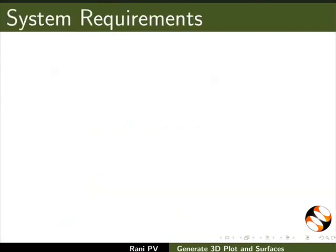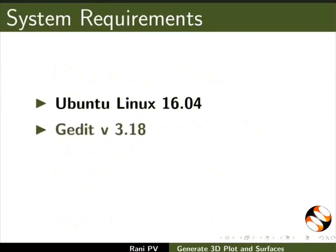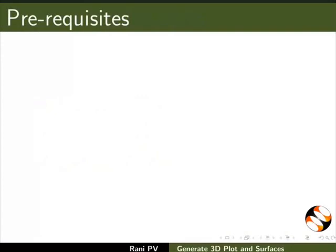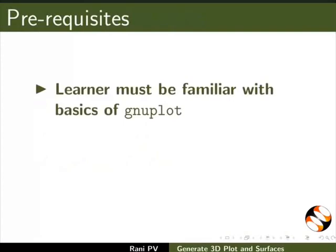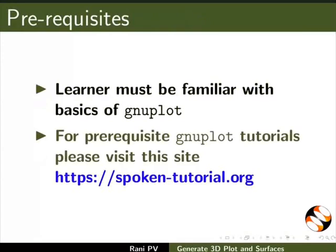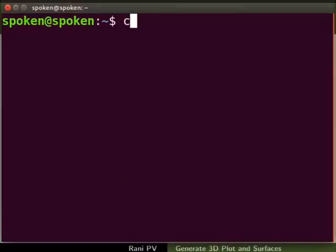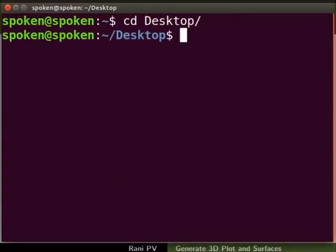To record this tutorial I am using Ubuntu Linux 16.04 OS, G-Edit version 3.18, and Gnuplot version 5.2.6. To follow this tutorial, learner must be familiar with basics of Gnuplot. For prerequisite Gnuplot tutorials, please visit this site. Open a terminal, change the directory to desktop. I will open Gnuplot from desktop directory in the terminal.